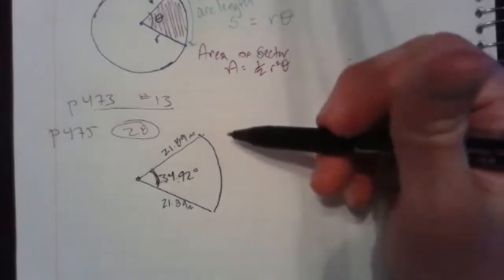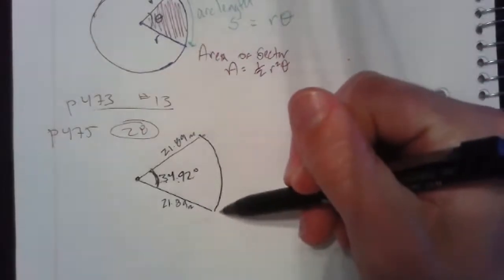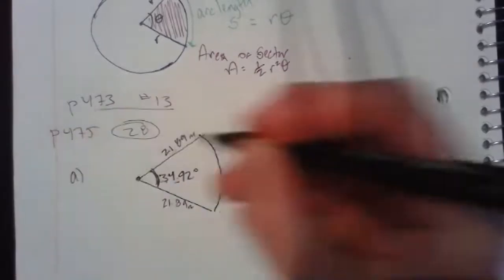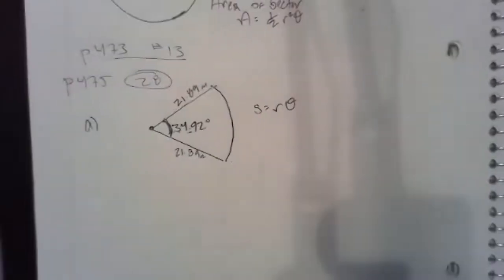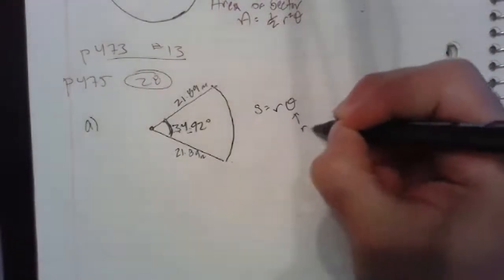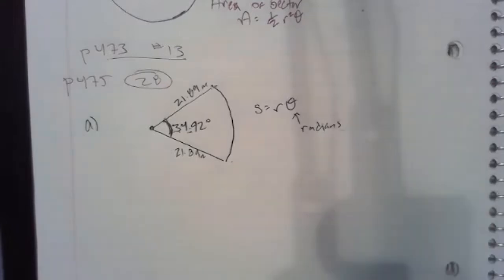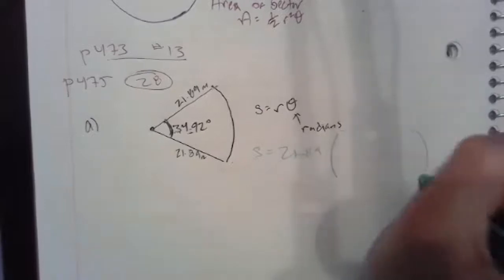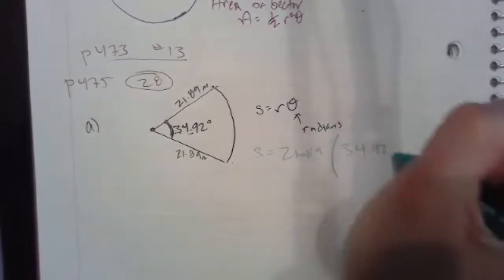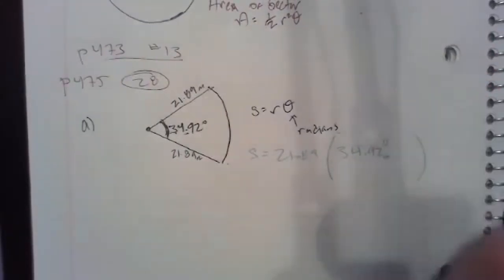So part a says that the officials draw an arc across the fair landing area marking the farthest throw. Find the length of the arc. Okay, so for part a, we're going to do s equals r theta. Now, big thing that a lot of people forget, especially when they're going really fast: theta needs to be in radians. We are no longer using degrees to do math; we have to use radians. Degrees—actually they are unitless, they don't really help with anything. So I know my radius, it is 21.89.